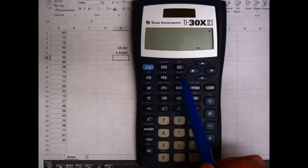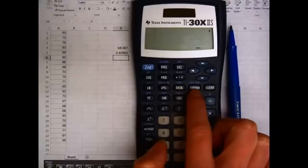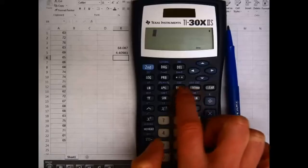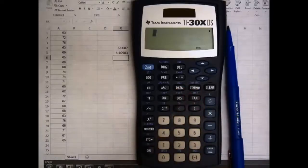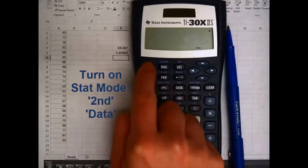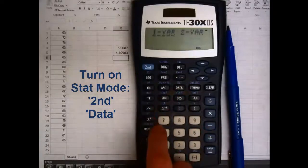This is a statistics function. We're going to be using this data key and the statvar key, and also the stat and exit stat button above here. First, I have to get all of this data into my calculator. To turn the stat mode on, you hit second and then hit the data key.